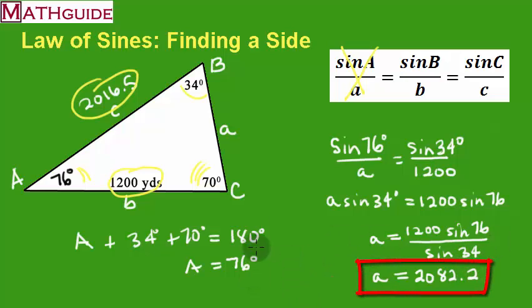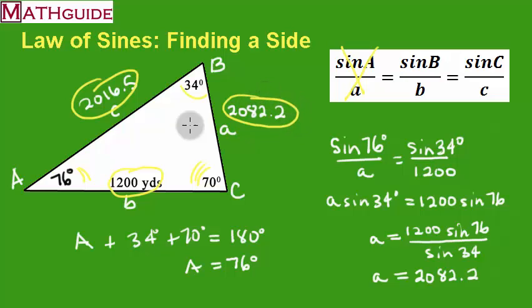And I get 2082.2. And that's in yards also. So I get 2082.2 yards. And we did predict that this would be the largest side, and it's coming to fruition that it is the largest side. And we knew that was going to be the case anyway, because it was opposite the largest angle.